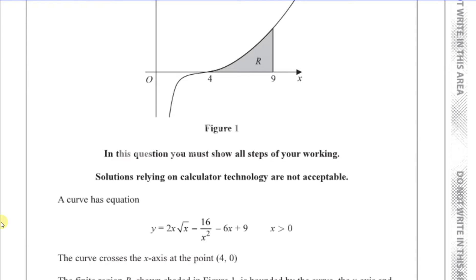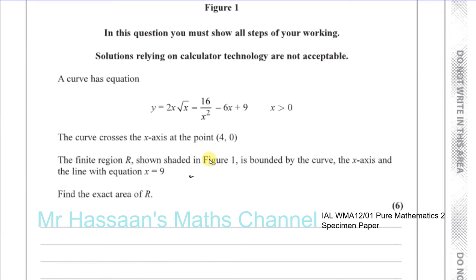So it says a curve has this equation y equals 2x times root x minus 16 over x squared minus 6x plus 9 and x is greater than 0. The curve crosses the x axis at the point 4, 0 and it says the finite region R shown shaded in figure 1 is bounded by the curve, the x axis and the line with the equation x equals 9. Find the exact area of R.